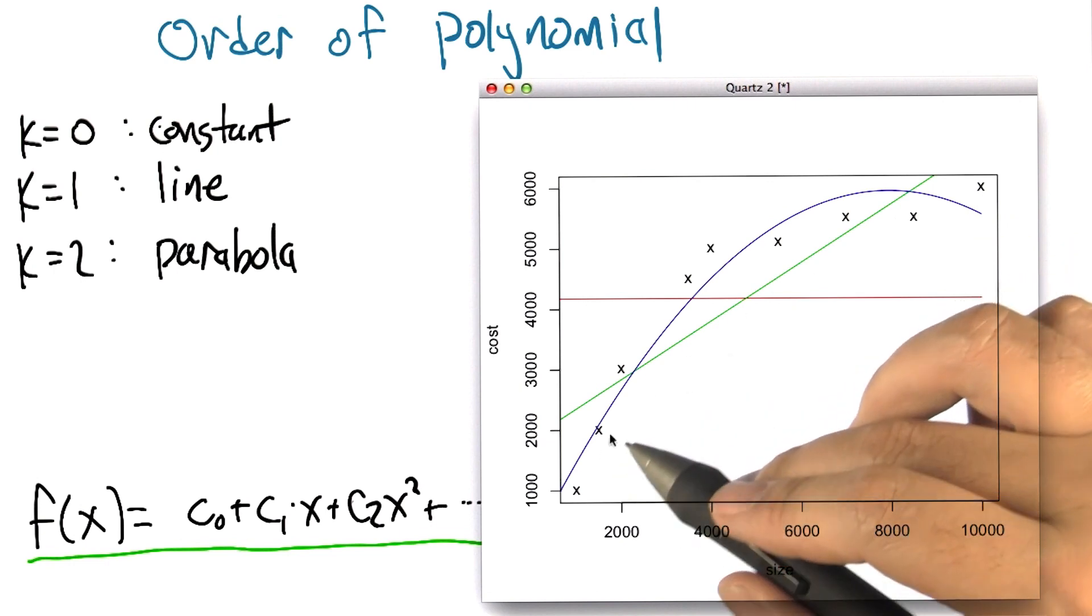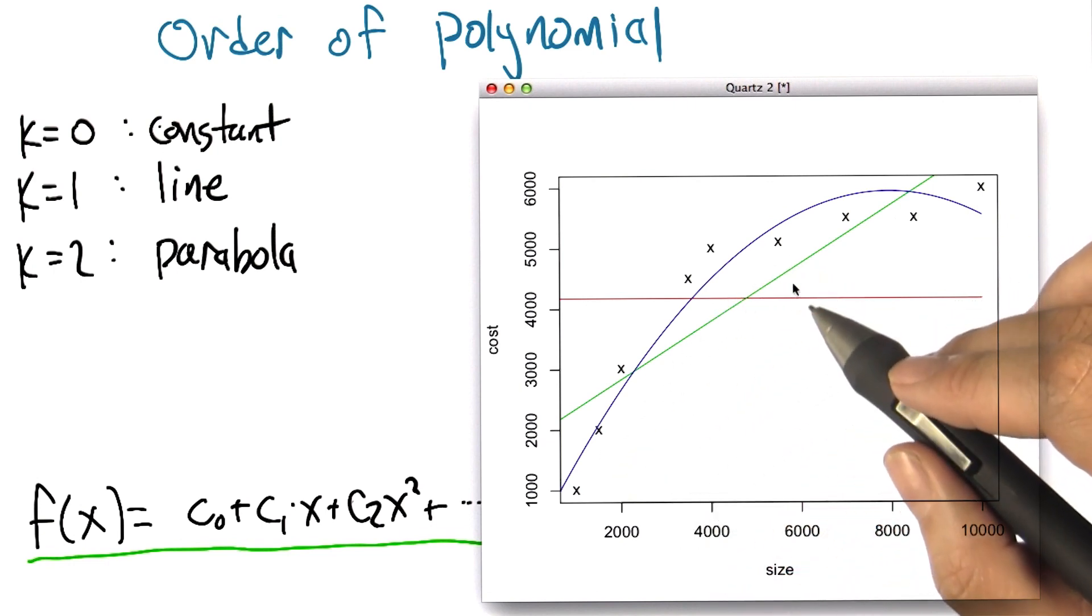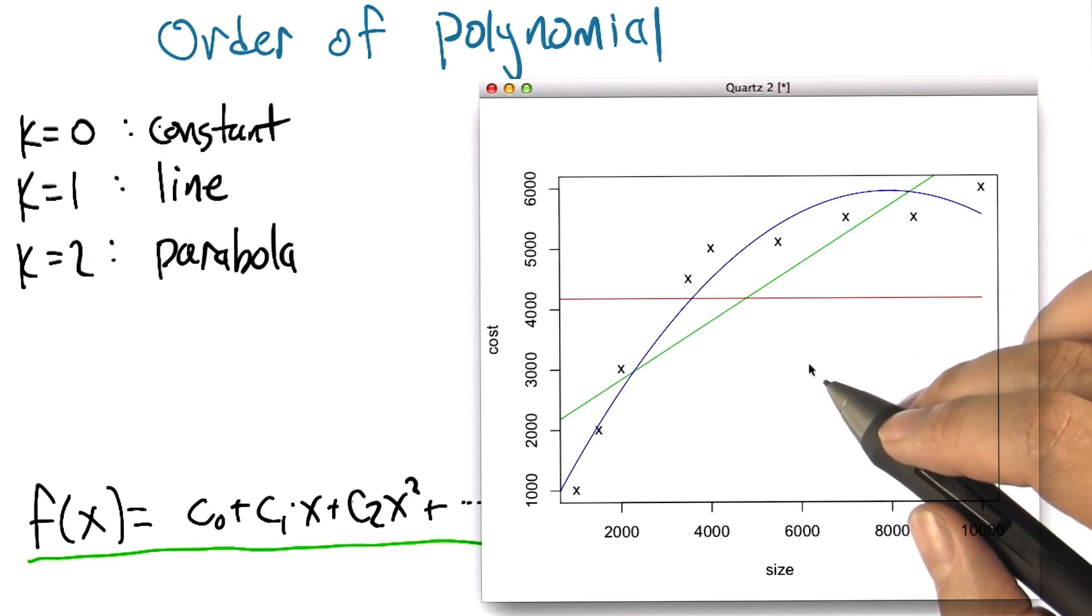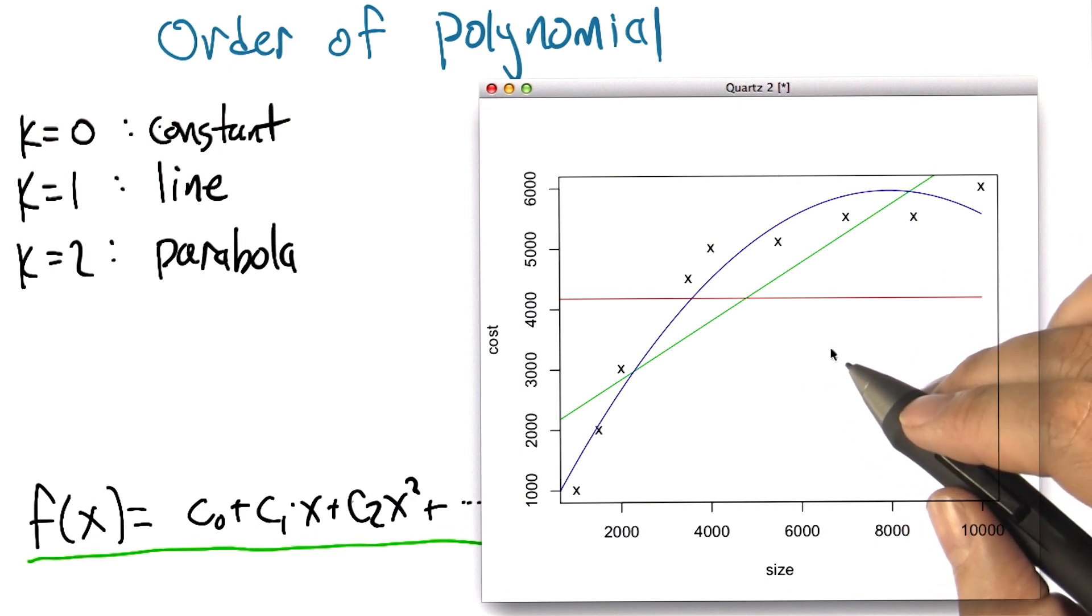So yeah, our error is going down. As we've gone from order zero to order one to order two. So can you think of any other way of getting the error to go down even more?